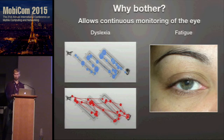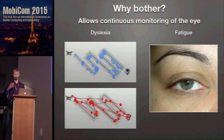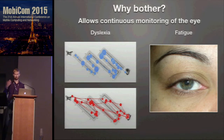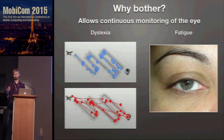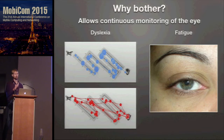Another application is fatigue. There are well-known measures using blinks and features of the eye to figure out how tired someone is. So if someone is doing something they cannot do safely while tired, such as operating heavy machinery, you could diagnose and warn them with a system like this.